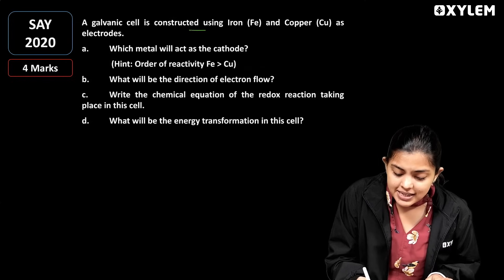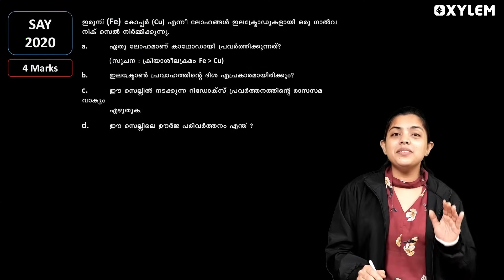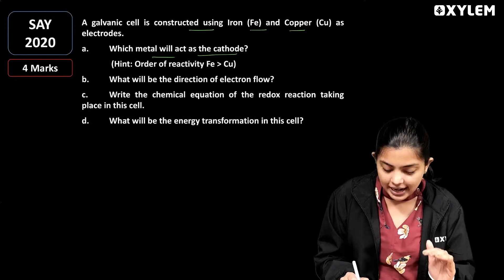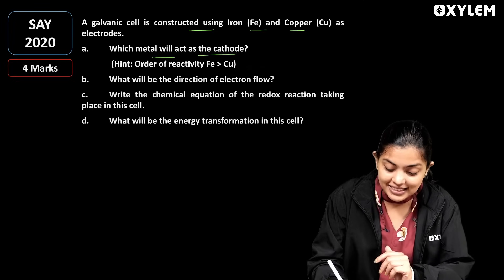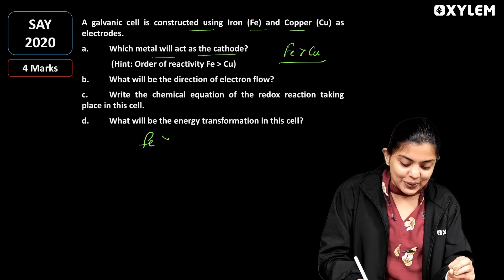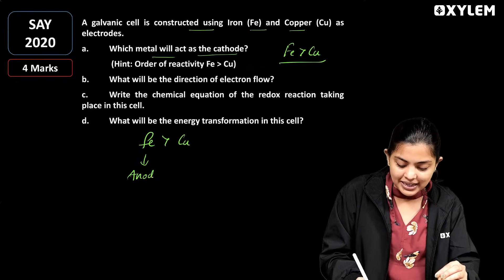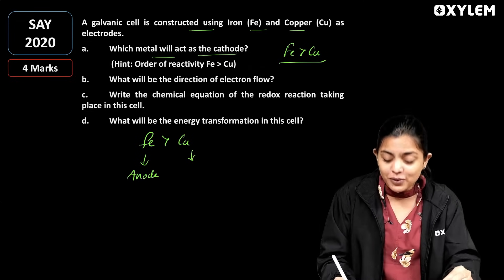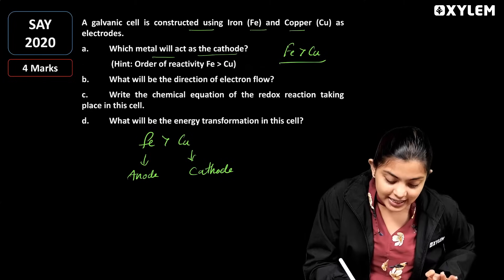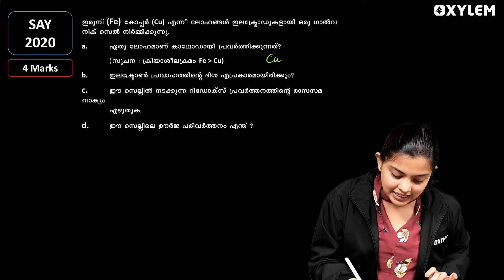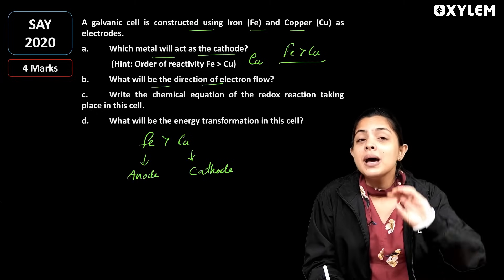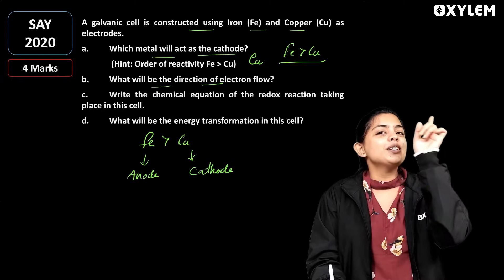Next question: a galvanic cell is constructed using iron and copper. The cathode is copper. What will be the direction of electron flow? Electrons flow from the anode — the oxidation side — to the cathode. The anode is iron, and electrons flow toward the copper cathode.